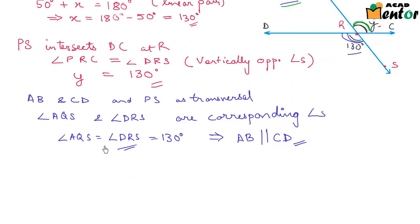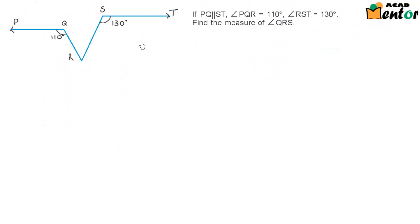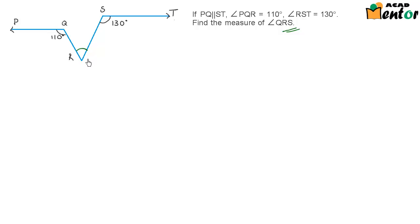Let's look at another example. In this figure, PQ is parallel to ST. We are given that angle PQR is 110 degrees and angle RST is 130 degrees. We are supposed to find out the value of angle QRS, which is this particular angle in the center. Looking at this figure, I am unable to figure out directly what could be done to find the value of this angle, so we'll need a construction.